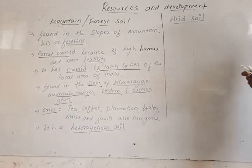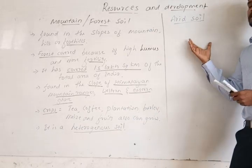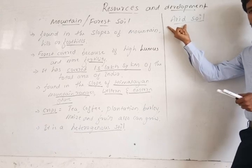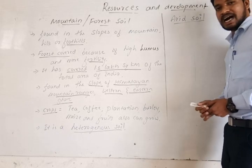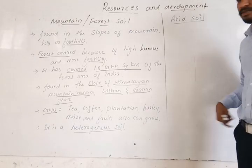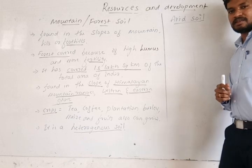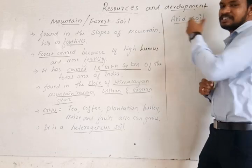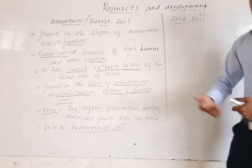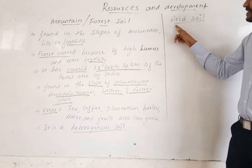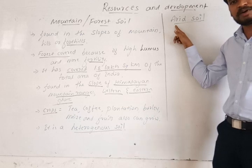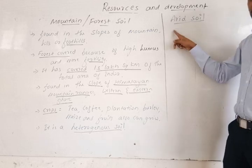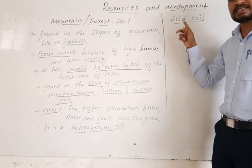Now I will go for the next and last classification of soil in India — arid soil. What do you mean by arid? You have heard this word in many classes like eighth and ninth. Arid means dry. Arid region means dry region. Where can we find this arid region in India? In Rajasthan, in the western part of India. So arid soil means the soil found in the arid region.